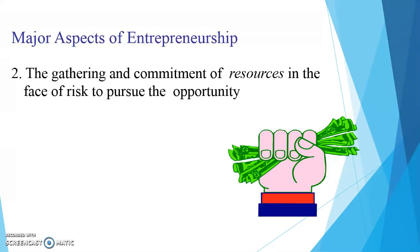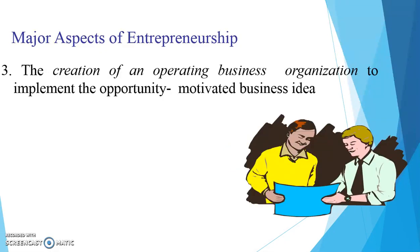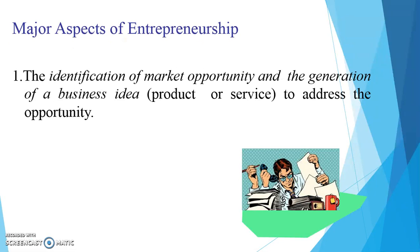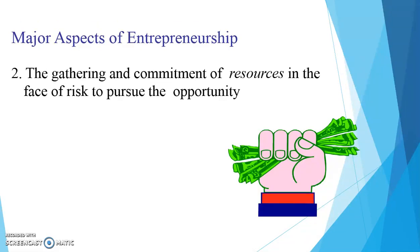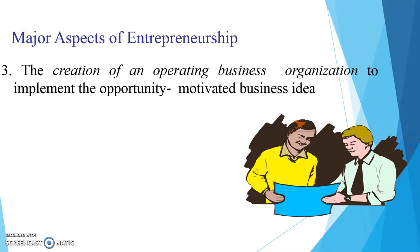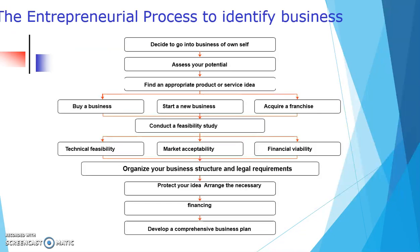What are the sources through which you can gather information? Another major aspect is the creation of an operating business organization — to implement the opportunity. Once you have decided to go with a startup business, first you have to identify a market opportunity and generate a business idea. Then, you have to gather information and commit resources. Then you have to convert that idea into an operating organization. This is the process of identifying the business.